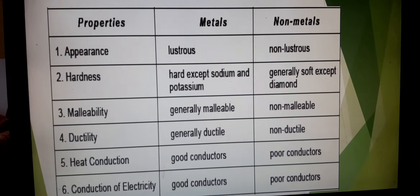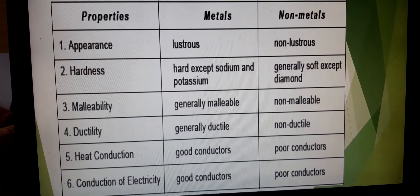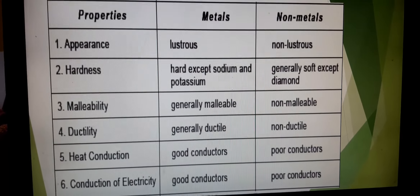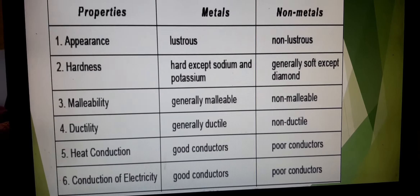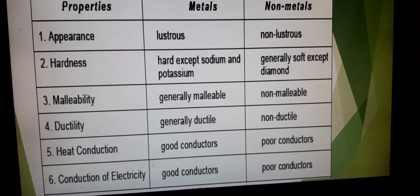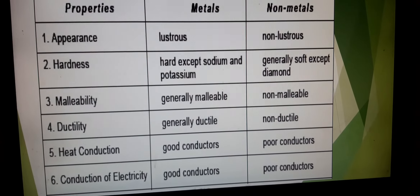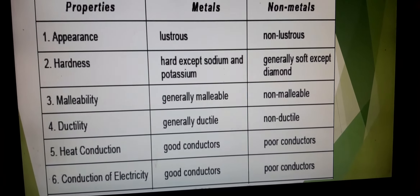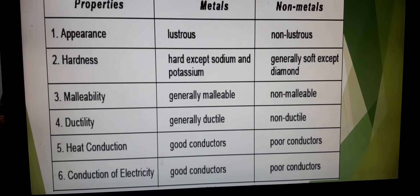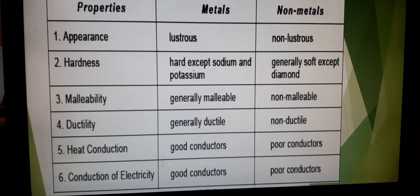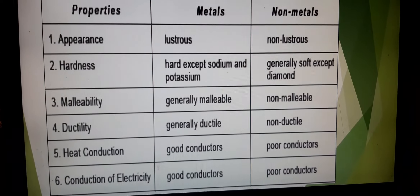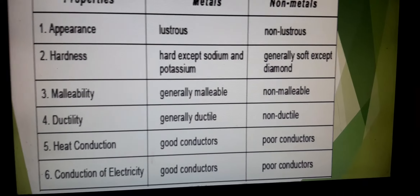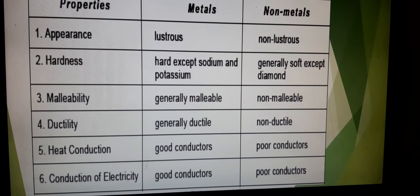This table shows the difference between metals and non-metals. Metals are lustrous; non-metals are non-lustrous. Metals are usually hard except sodium and potassium; non-metals are usually soft except diamond. Metals are generally malleable; non-metals are non-malleable. Metals are generally ductile; non-metals are non-ductile. Metals are good conductors of heat and electricity; non-metals are poor conductors of heat and electricity. Write this table in your copy.